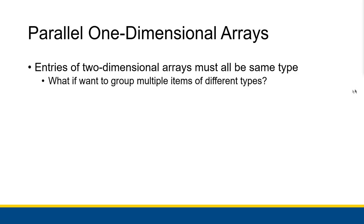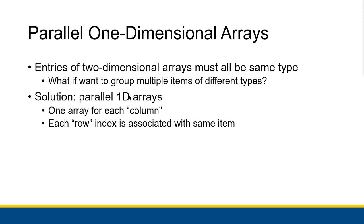Now let's talk about parallel one-dimensional arrays, because entries of two-dimensional arrays all have to be the same type — all strings, or all doubles, or something like that. But what if we want to group multiple items of different types? Like, what if we wanted a two-dimensional array where one column was a string and another column was a double? For example, say we wanted to keep track of the number of inches of rainfall every single state in the United States received, with a 2D array where column zero is the name of the state and column one is the amount of rain they got in inches. With 2D arrays in Visual Basic, that's simply not possible.